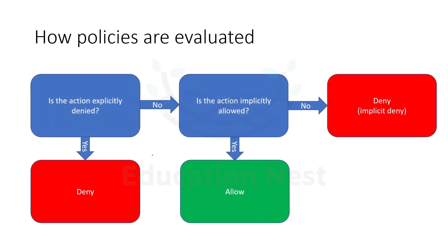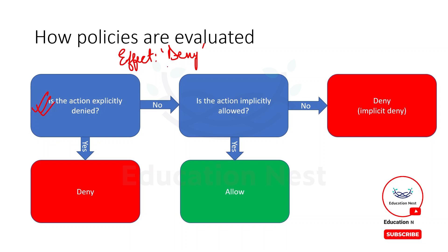So how are policies being evaluated? First of all, we will check: is the action explicitly denied anywhere? We can deny any action by putting 'Deny' instead of 'Allow' in the effect. If the effect is Deny, then the final result would be denied.